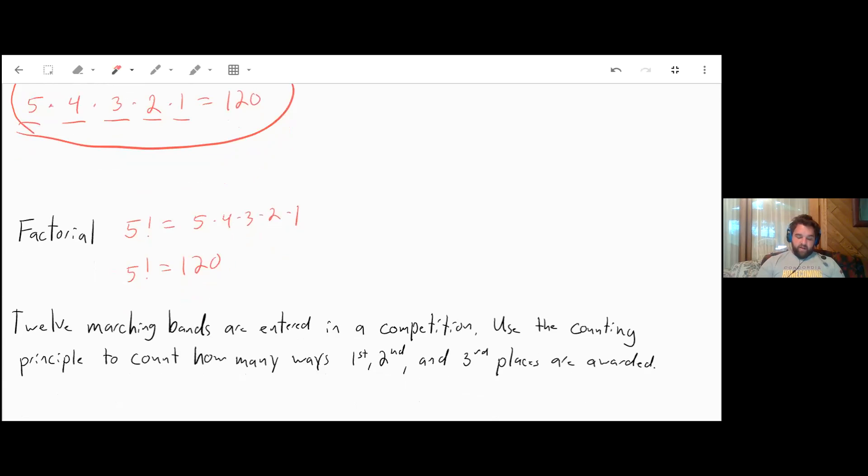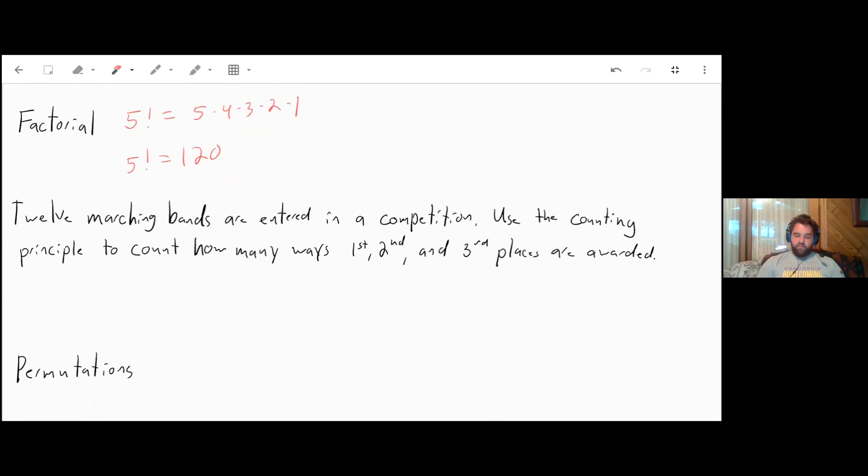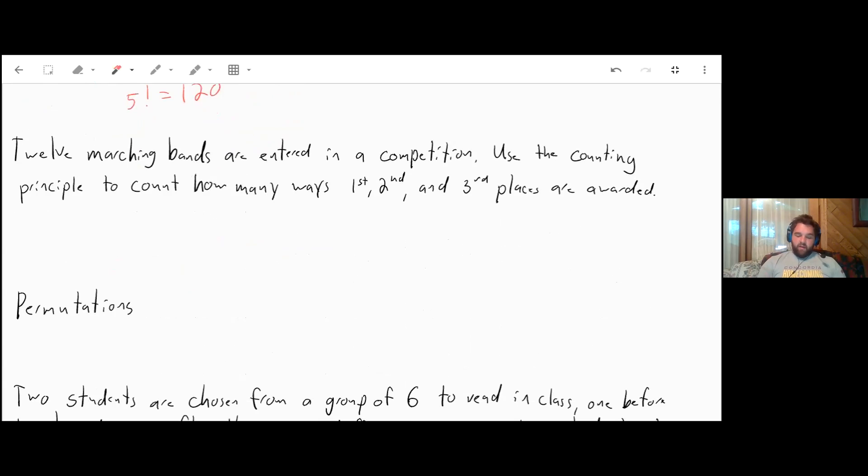So 12 marching bands are entered in a competition. Use the counting principle to count how many ways first, second, and third places are awarded. Well, when you're choosing your first place band, you have 12 different bands you can choose from. After that you're down to 11 for second place and 10 for third place. So when you multiply that out, that will come out to be 12 times 11 times 10 is 1320. So you'd have 1320 ways to award the top three places.